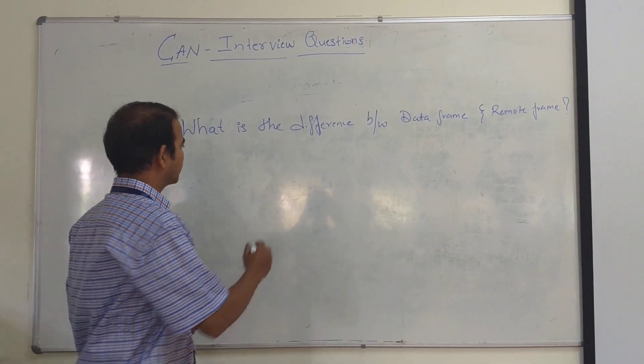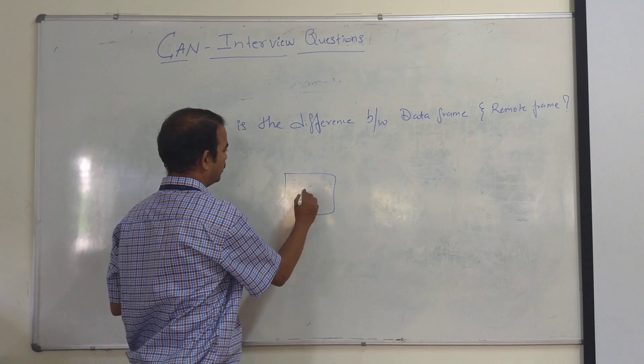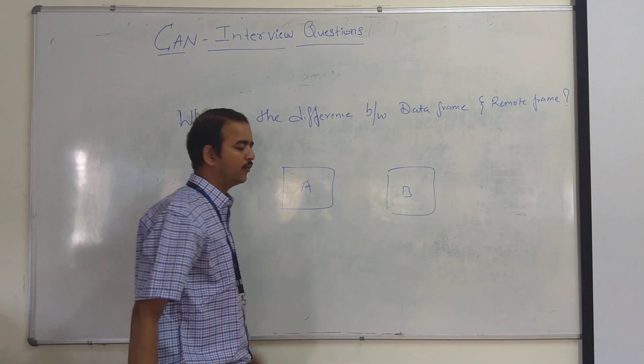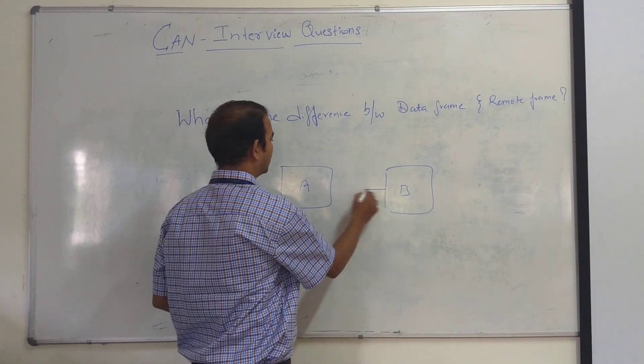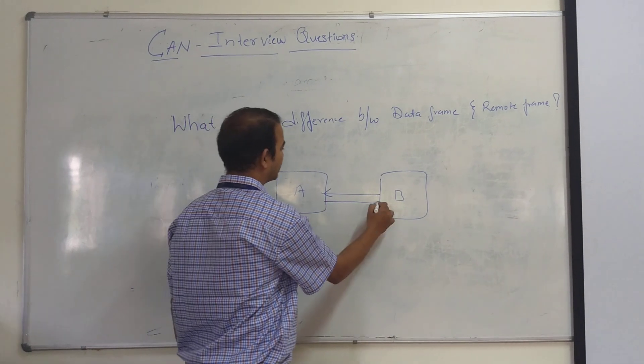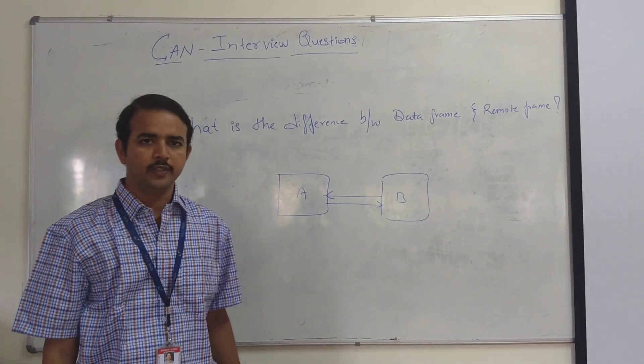For example, if there are two ECUs, ECU A and ECU B. Now, if ECU B wants some data from ECU A, then it can send a RemoteFrame. On receiving this RemoteFrame, ECU A can send the data to ECU B.